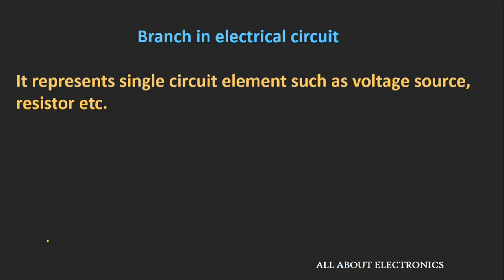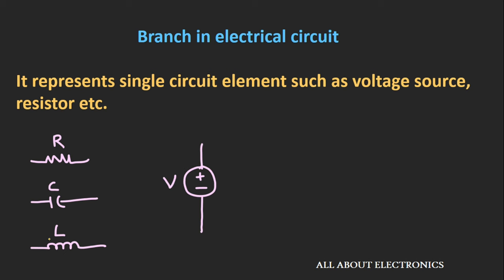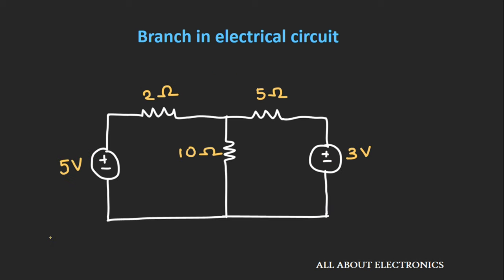A branch in the electrical circuit represents a single circuit element. This single circuit element could be a passive component like a resistor, capacitor, or inductor, or it could be a voltage source or a current source. Now let us find the branches in the given circuit. This circuit contains 5 circuit elements — 3 resistors and 2 voltage sources — so this circuit contains 5 branches, as each branch represents a single circuit element.